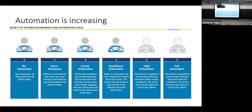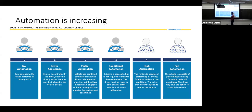As we know, automation in vehicles is increasing. In older cars, the driver performed all tasks — no power steering, manual gear changes. Then came driver assistance features like power steering. Then partial automation: adaptive cruise control, lane-keeping assist systems.